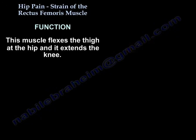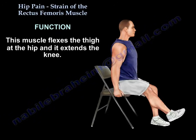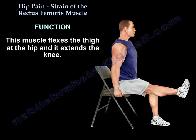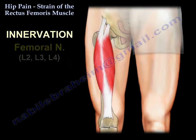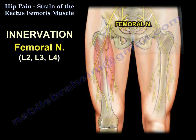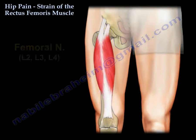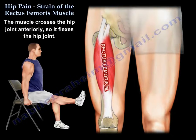This muscle flexes the thigh at the hip and extends the knee. The innervation comes from the femoral nerve, which is L2, L3, and L4. So, if it crosses the hip anteriorly, then it flexes the hip joint.